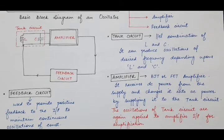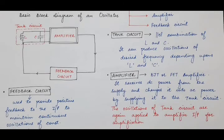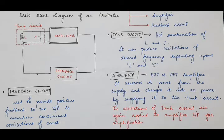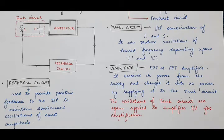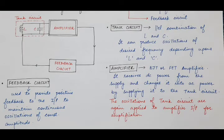The third component of the oscillator is the feedback circuit. The feedback circuit provides positive feedback to the input of the amplifier in order to maintain continuous oscillations of constant amplitude — that is, for sustained oscillations of constant amplitude, we use positive feedback, which is provided by this feedback circuit.